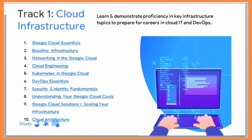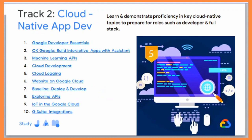In the Cloud Infrastructure track, by completing the quests, you will learn and demonstrate proficiency in key infrastructure topics to prepare for careers in cloud IT and DevOps. There are a total of 10 quests and 8 skill badges under this track. Today you will be doing the first one — Google Cloud Essentials. The rest of the quests you'll need to complete on your own by the 10th, and we'll provide enough support to help you through them.